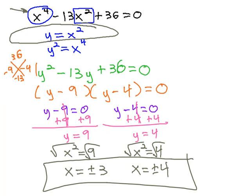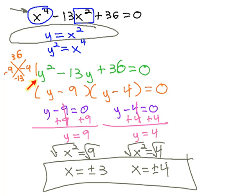We found those solutions by noticing that one exponent on x was double the other. We introduced a new variable and made it equal to that middle piece, so that when we square the new variable, it equals that first piece. Substituting gives us a quadratic, which we can solve by factoring, the quadratic formula, or completing the square, and then we change back using our y equals equation by replacing y with x squared and solving for x.